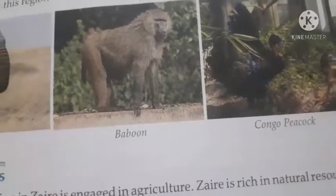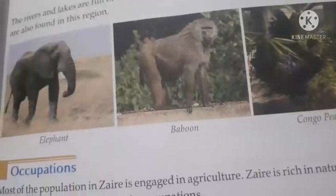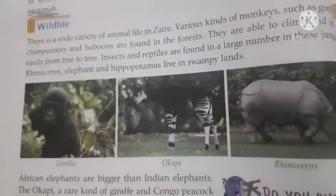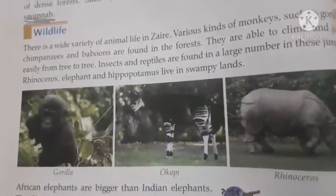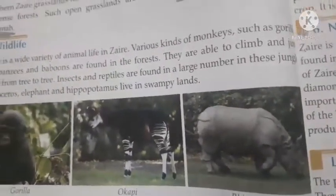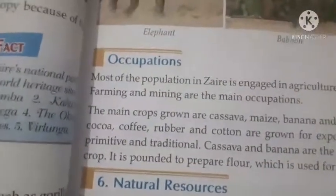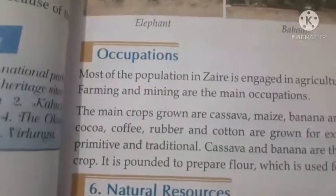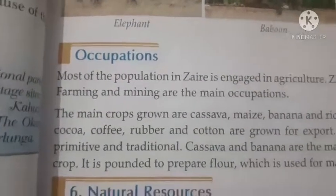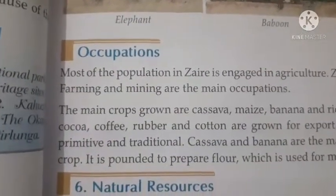You can see pictures of the Congo peacock in your book on page number 29. Pictures of gorillas, okapi, and rhinoceroses are also given there. In the next video lecture we will discuss about occupation. Till then, stay home, stay safe, and watch the video carefully.